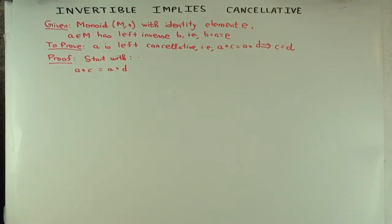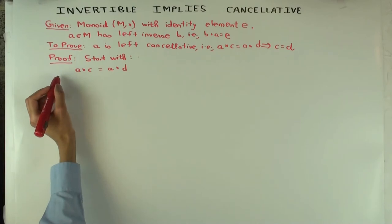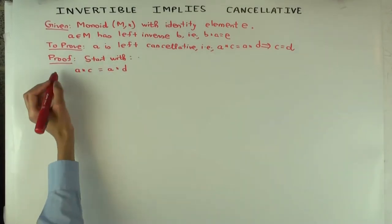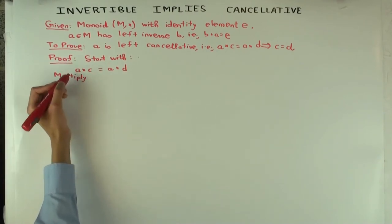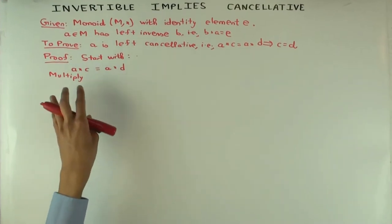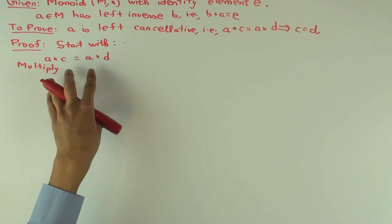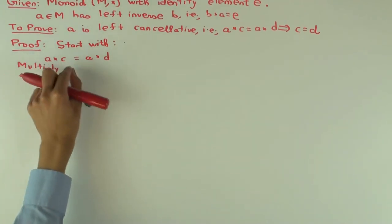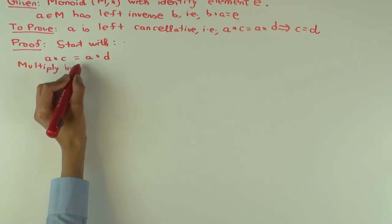So what do we do here? We have to somehow use the left inverse, right? We have this equation. What do we multiply it by? B. On which side? Left. So since now group operations and monoid operations are not commutative, when you say multiply both sides by something, you have to specify whether you're multiplying it on the left or the right within each side.